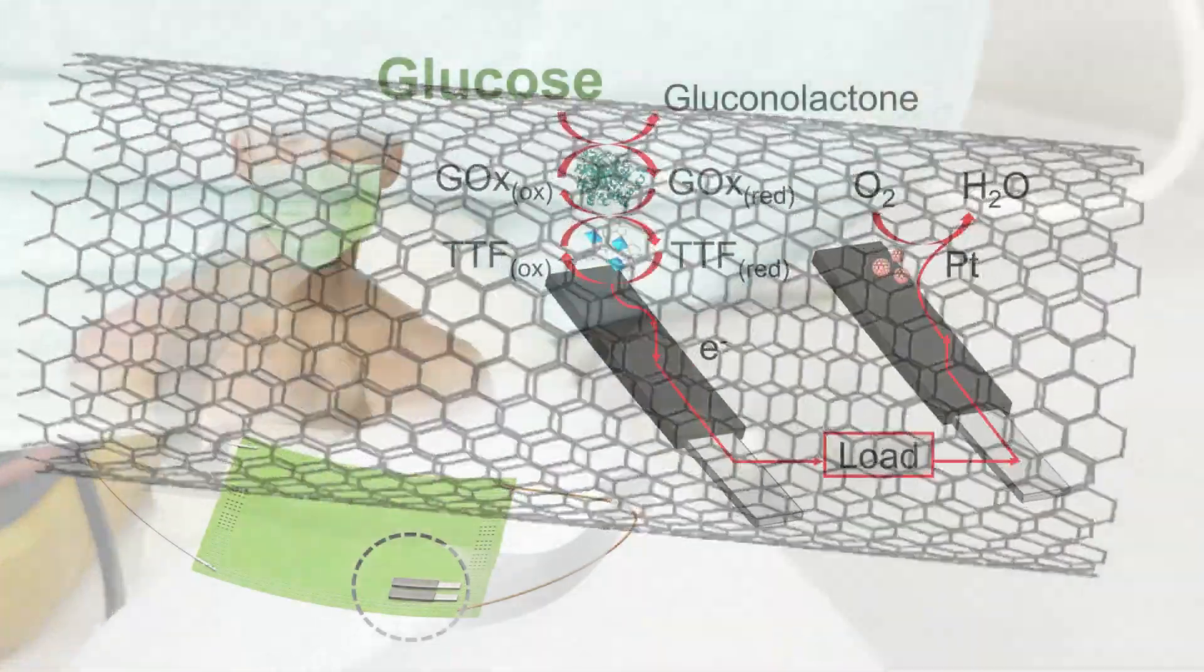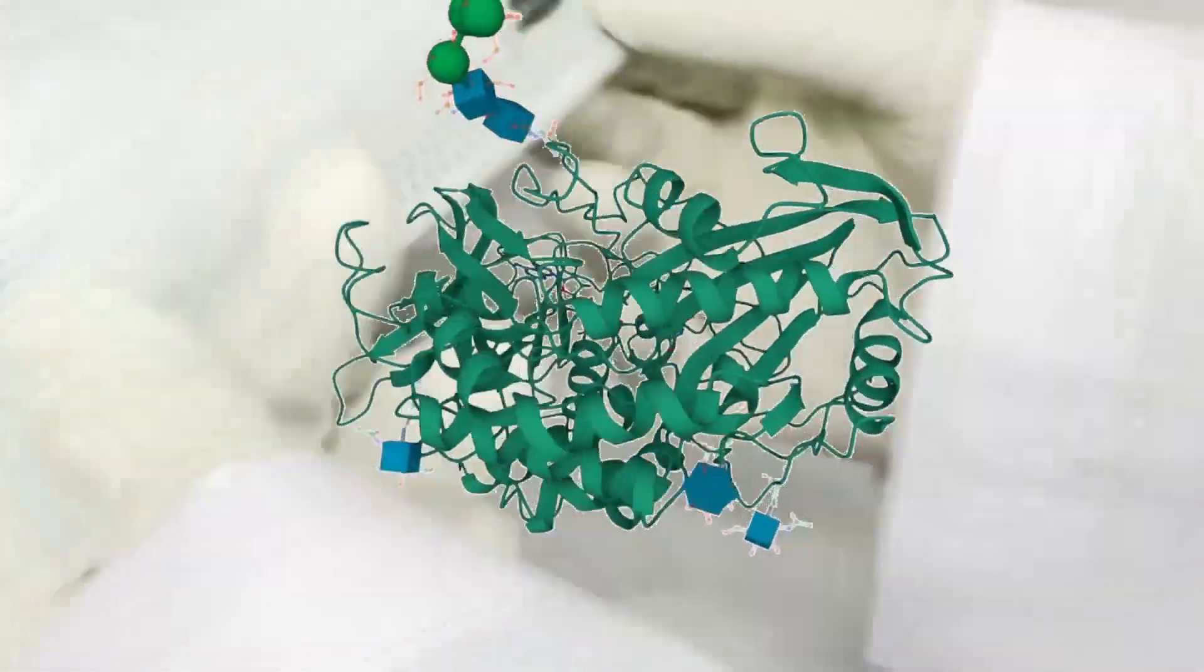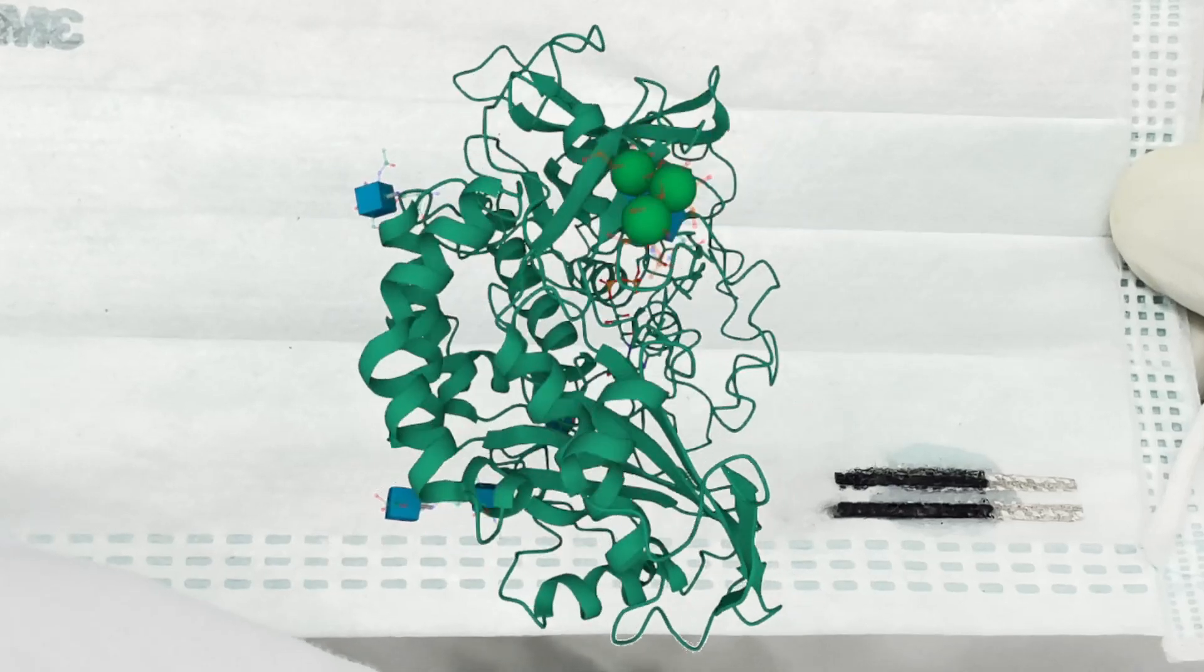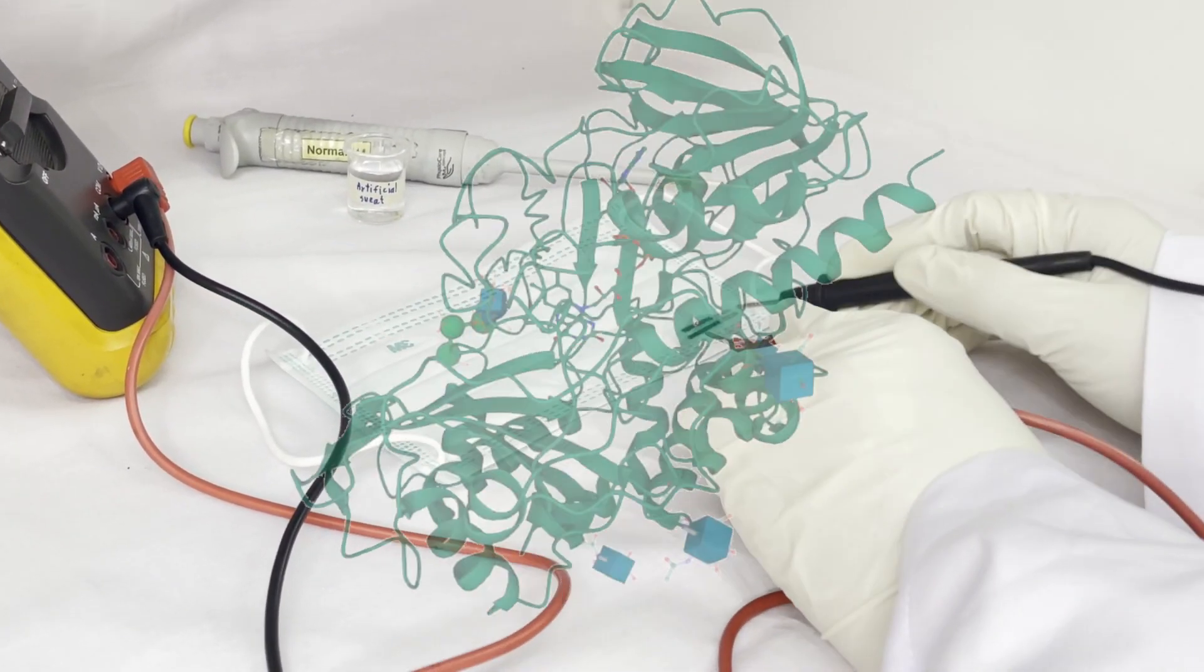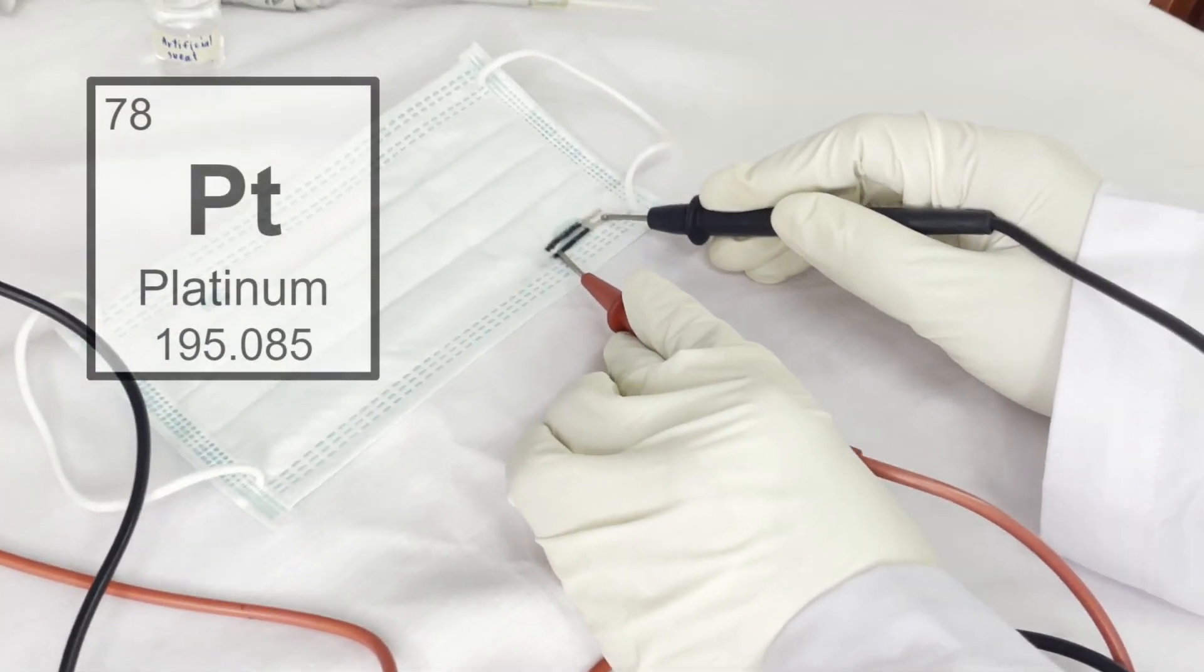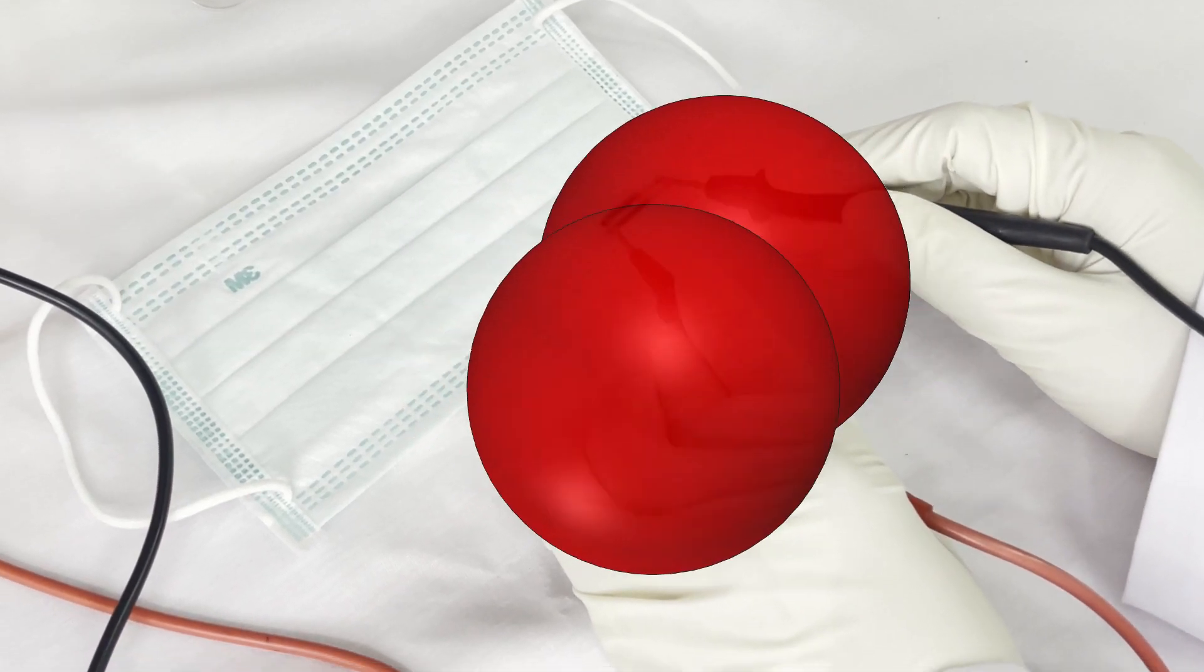The bioanode relies on the oxidation of glucose with the assistance of glucose oxidase and active materials on the masked electrode, whereas the cathode, with the assistance of platinum-based materials, utilizes natural oxygen.